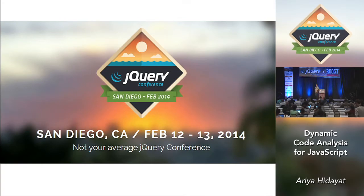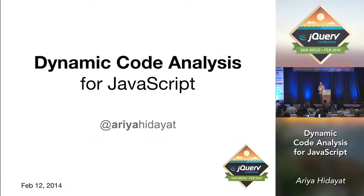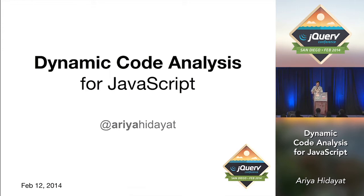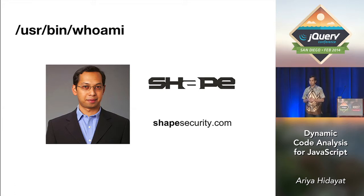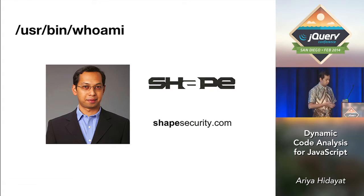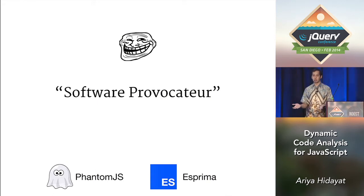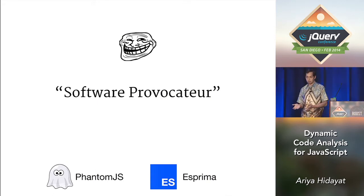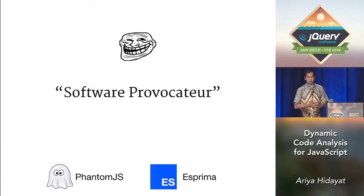For the next 40 minutes, we'll be talking about dynamic code analysis. I work for cybersecurity — we create the internet's first bot wall, which aims to deflect scripted bot attacks to our customers' websites. At night, you'll find me dealing with some open source projects, such as PhantomJS and Esprima. The goal of these projects is to improve the state of front-end development.